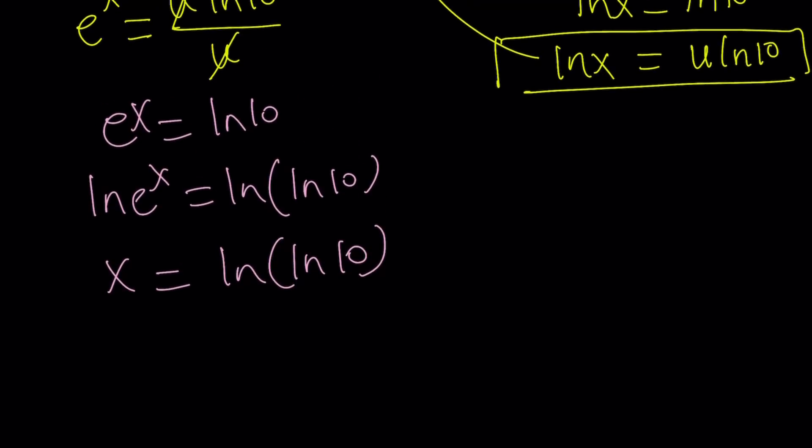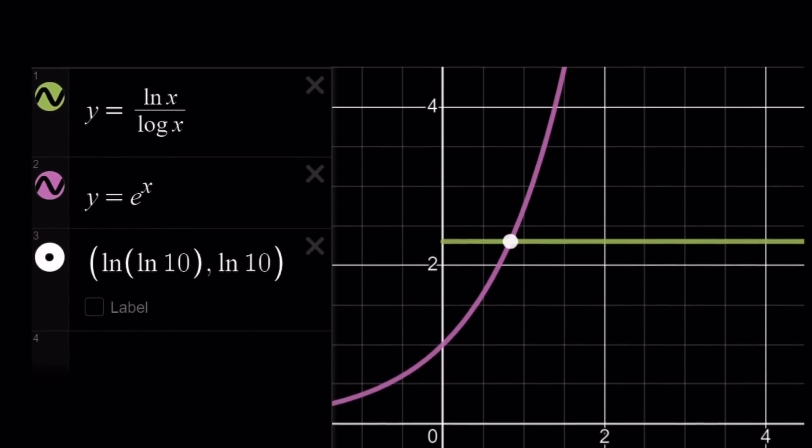We're going to look at the graph now and see what the graph looks like. So here's my graph of y equals ln x over log x, the green line. It's not a curve, by the way, because as you know, it is a constant. And y equals e to the power x. Great. So anyways, this hopefully makes sense. And this brings us to the end of this video.